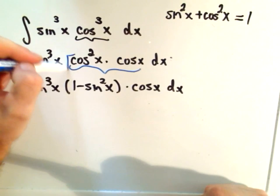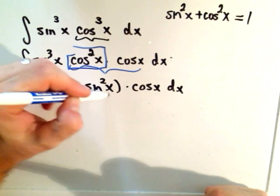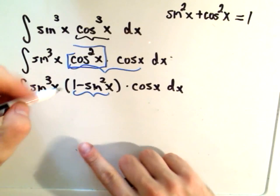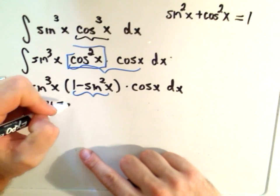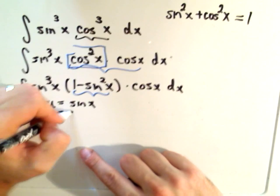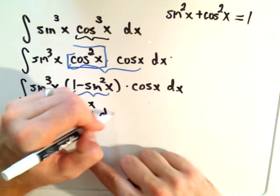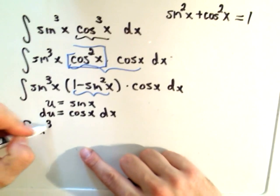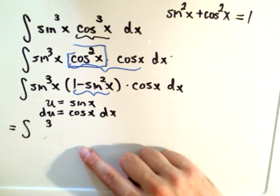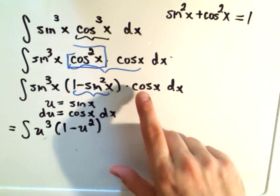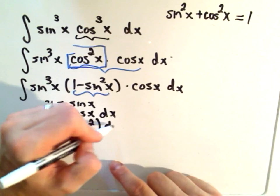My cosine squared is turning into the one minus sine squared. Now I'll just do a u-substitution. If you let u equal this time sine of x, the derivative will be cosine of x dx. If we plug that in, we'll simply get u to the third out front, and then we'll have one minus u squared. Cosine of x dx is simply du.